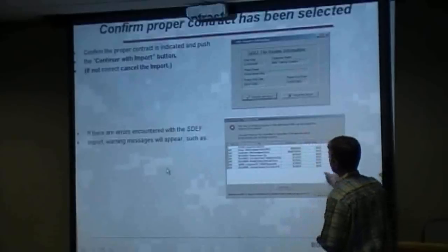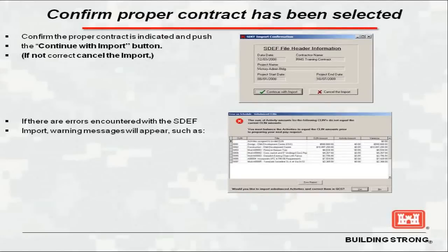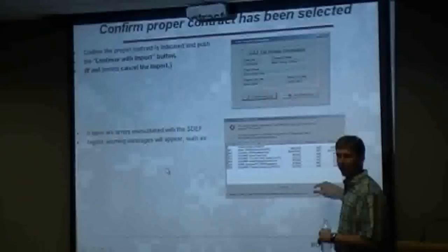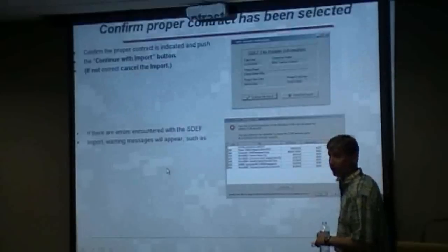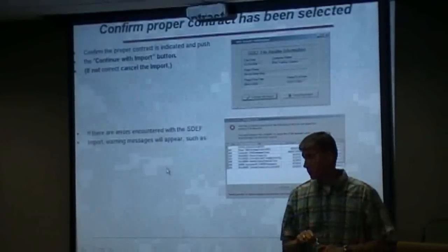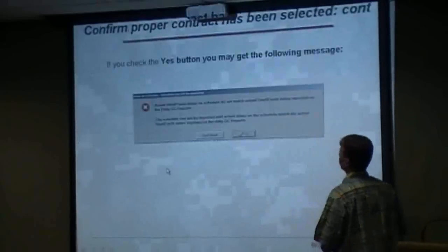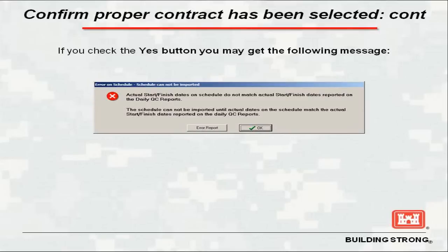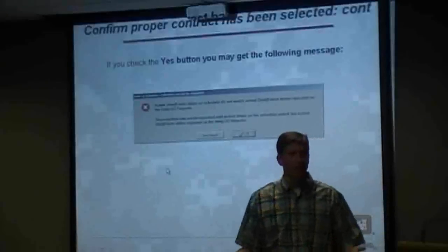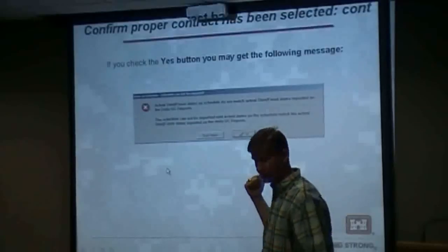This is a new feature right here — it says the activities don't match the clean values, and here's where your problems are. It will not import that SDEF until you fix this in Primavera and send a properly balanced schedule. This is part of the checks and balances — it's got to be accurate and right. Here's another error: the actual start dates don't match the start and finish dates reported on the daily reports. You solve that by printing that report and giving it to the scheduler before he does his payout.